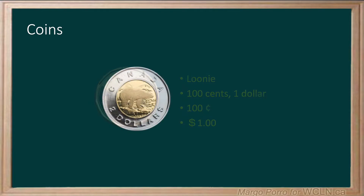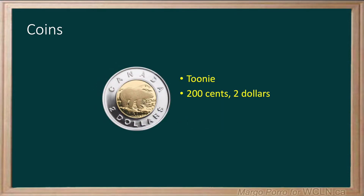Our two dollar coin is called a toonie. This coin has a value of 200 cents, which is equivalent to two dollars. Although it can be written using the cent sign, it's usually written with a dollar sign.